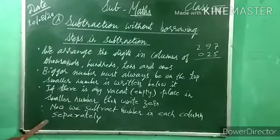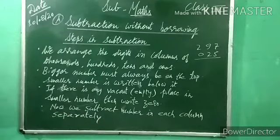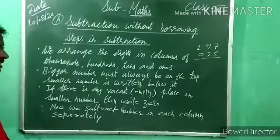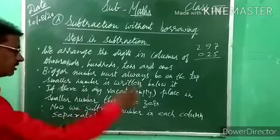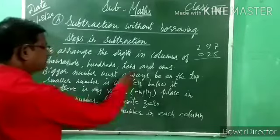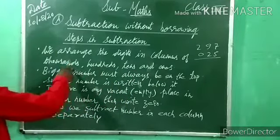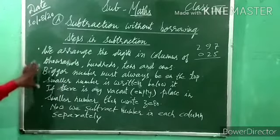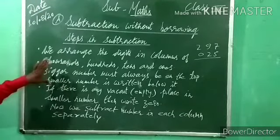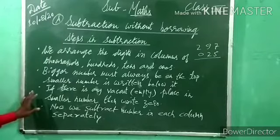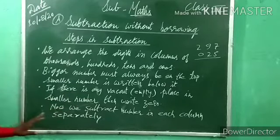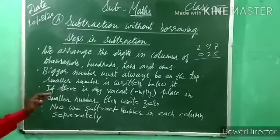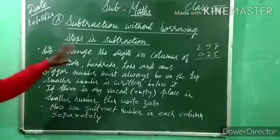Fourth step: after doing all these things, we subtract the numbers in each column separately. Haami right se solve karna hai — addition ho ya subtraction, always start from the right side: first 1s, then 10s, then 100s, then 1000s. Column wise subtract karna hai.